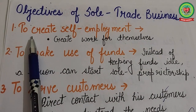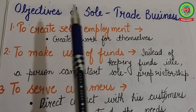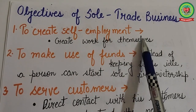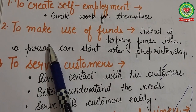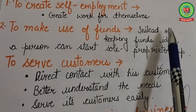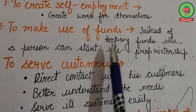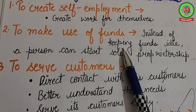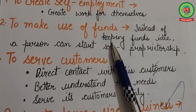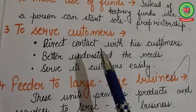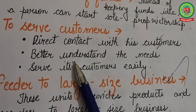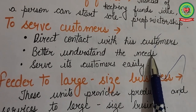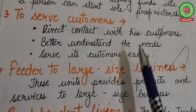The next topic is objectives of sole proprietorship business. The first objective is to create self-employment — sole proprietorship helps people create work for themselves instead of looking for a job outside. The second is to make use of funds — instead of keeping funds idle, a person can start a sole proprietorship and make productive use of surplus resources. The third is to serve customers — a sole trader comes in direct contact with customers and can better understand their needs.